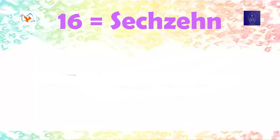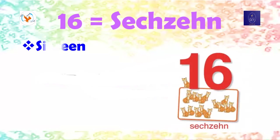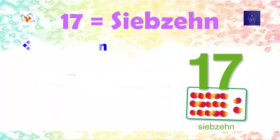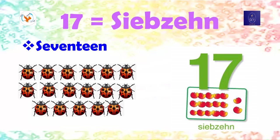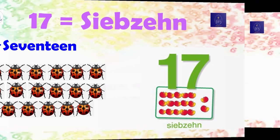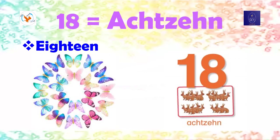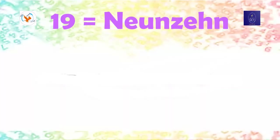Numbers 16 and 17 are spelled differently than the other teen numbers. Sechzehn. Sechzehn. Siebzehn. Siebzehn. Achtzehn. Achtzehn. Neunzehn.